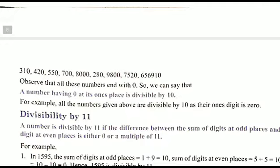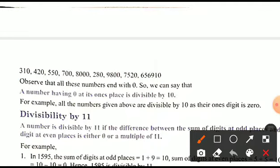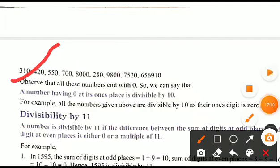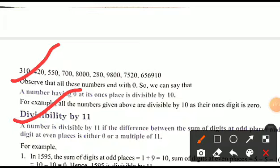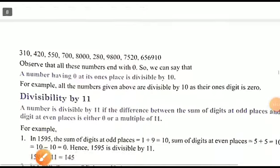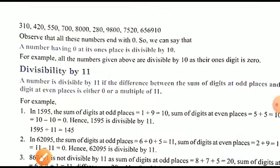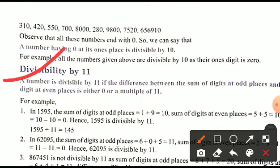Divisibility by 10: if any number has zero at its ones place, the number is divisible by 10.